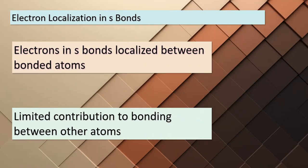Welcome to our next topic, where we're delving into the concept of electron localization in sigma bonds. The electrons in sigma bonds are primarily localized in the space between the two atoms that are bonded together. This localization means that they are closely associated with this particular bond and don't significantly contribute to the bonding between any other two atoms. This phenomenon is a key feature of how atoms form bonds.